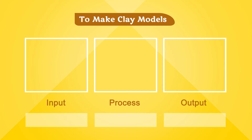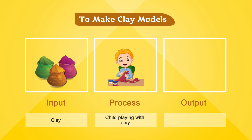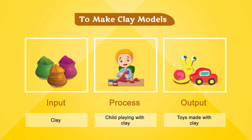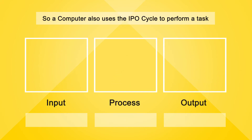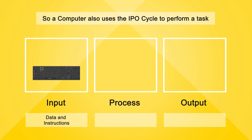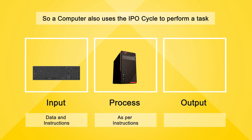For making clay models — Input: clay; Process: a child playing and shaping with clay; Output: toys made from clay. Similarly, to perform a task, a computer also uses the IPO cycle — Input: data and instructions; Process: as per instructions; Output: information.